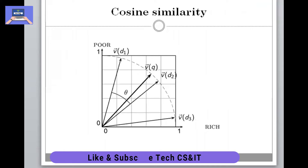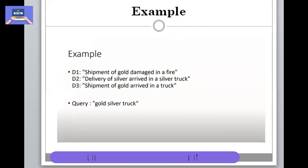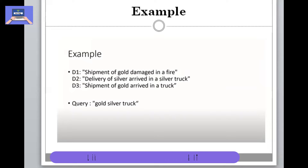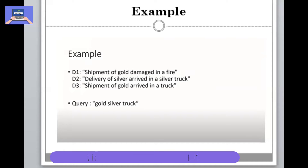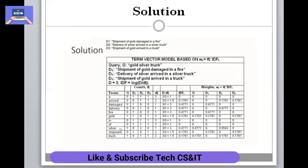Let's get into an example. We have three documents: D1 — 'shipment of gold damaged in a fire'; D2 — 'delivery of silver arrived in a silver truck'; D3 — 'shipment of gold arrived in a truck'. The query term is 'gold silver truck'. Let's work through what is actually happening in this solution.